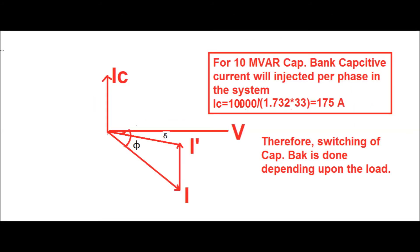How power factor is improved is shown in this vector diagram. Here, I is the lagging current which lags the voltage by power factor angle φ. After switching on the capacitor bank, the power factor angle is improved to δ and the current comes to I'. Since the capacitor bank capacity is 10 MVAR, the reactive power injected into the system will be 175 amperes per phase.